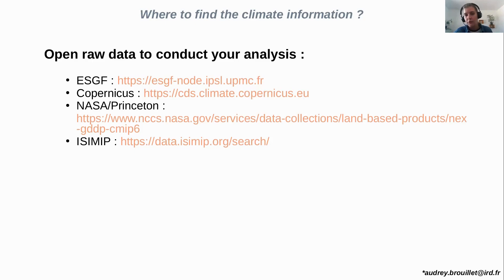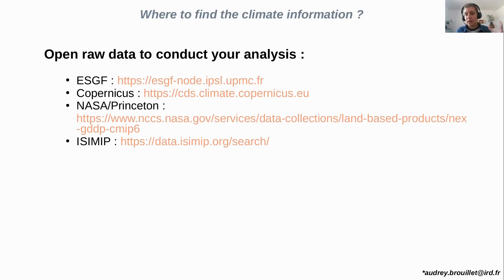For example, if you are interested in future projections of crop yields — maize yields, rice yields, wheat yields — you have free access to such simulations. ISIMIP is an exercise that uses CMIP in terms of climate inputs, and then performs simulations of the impact of global warming. You have data on crop yields, river discharge, and lots of results for different global warming scenarios.